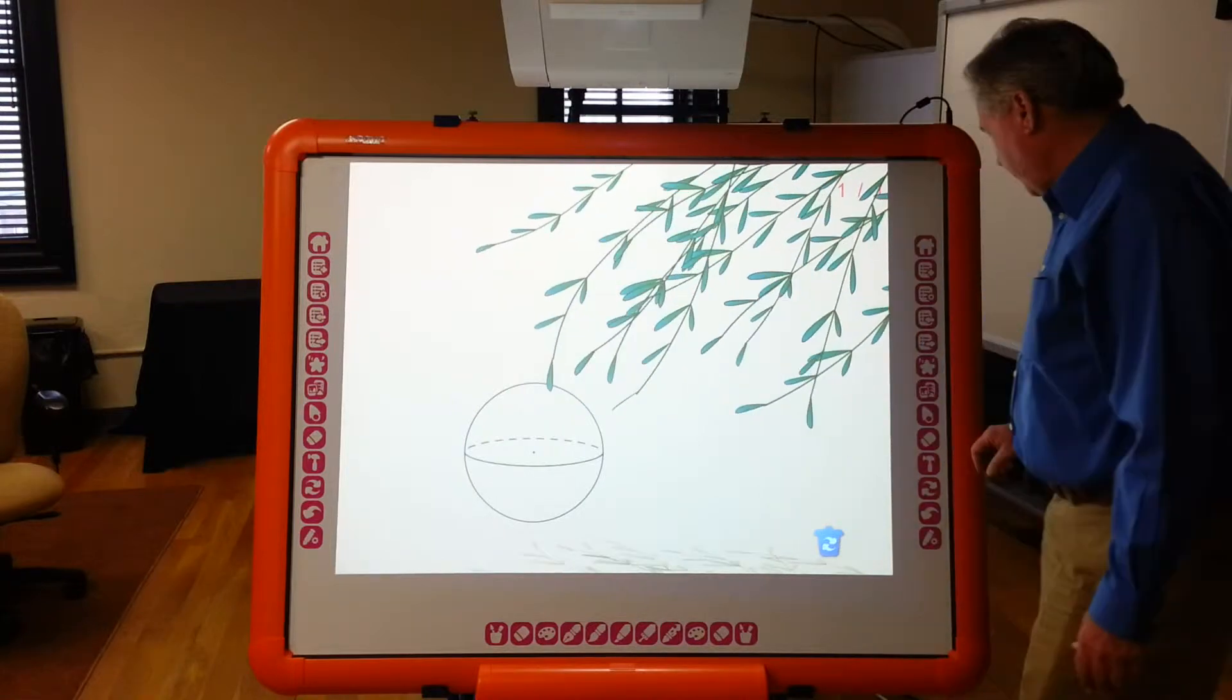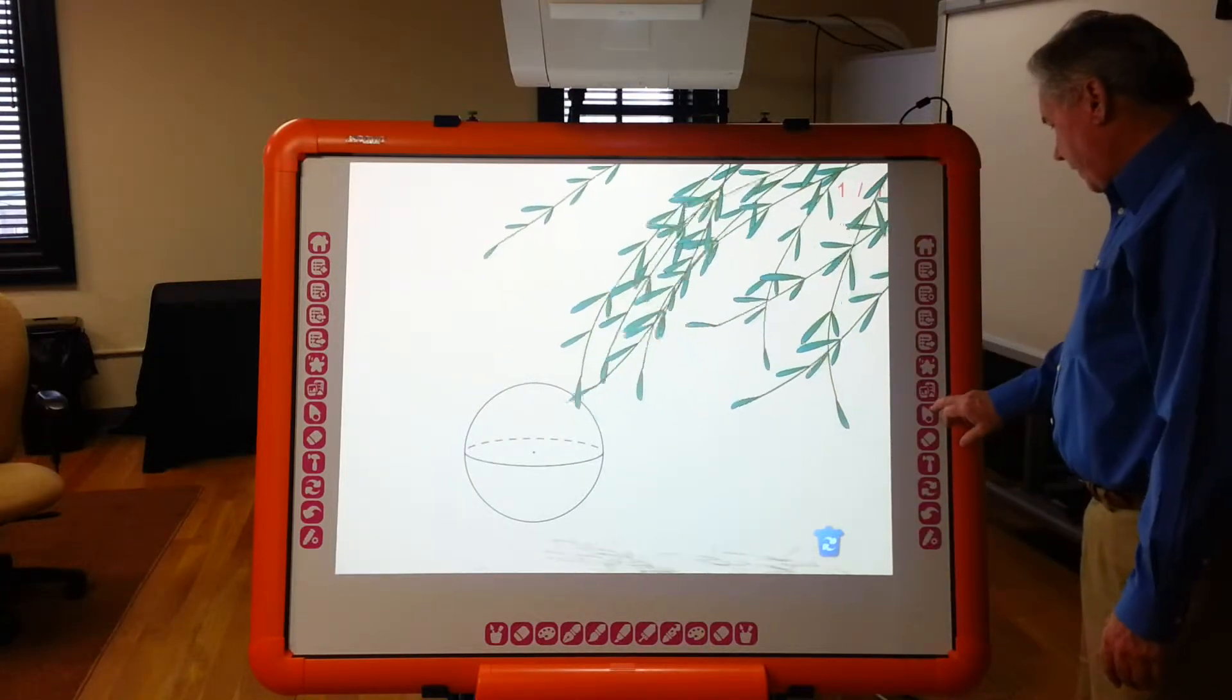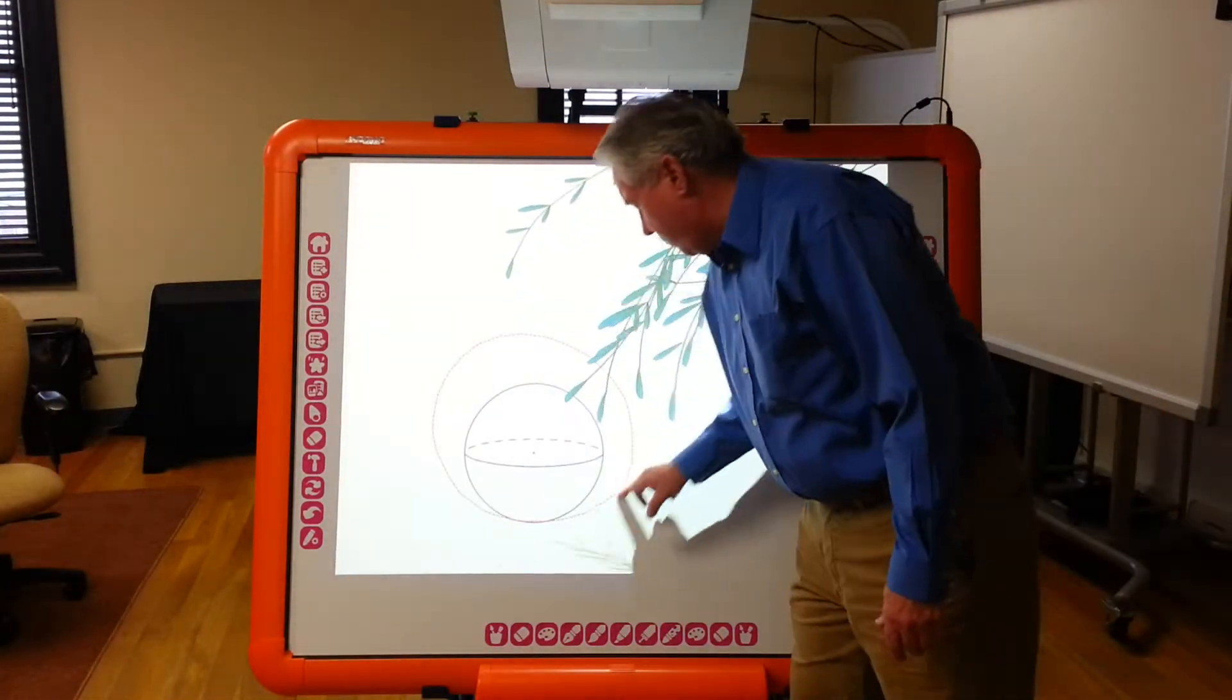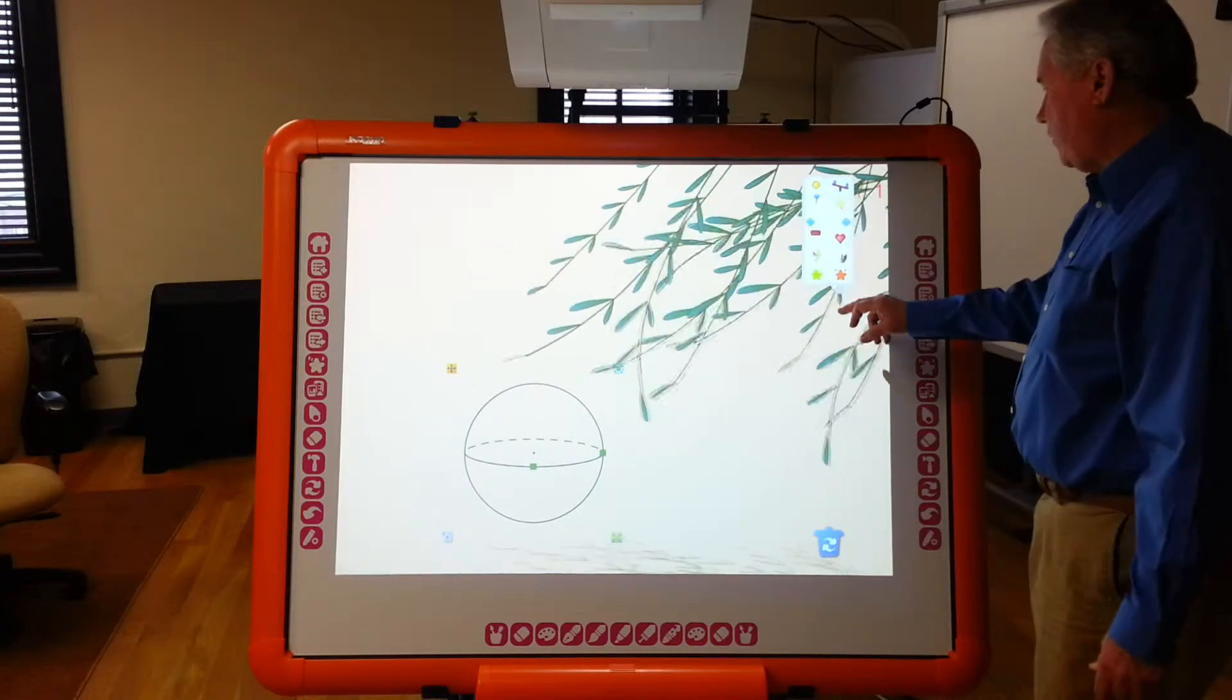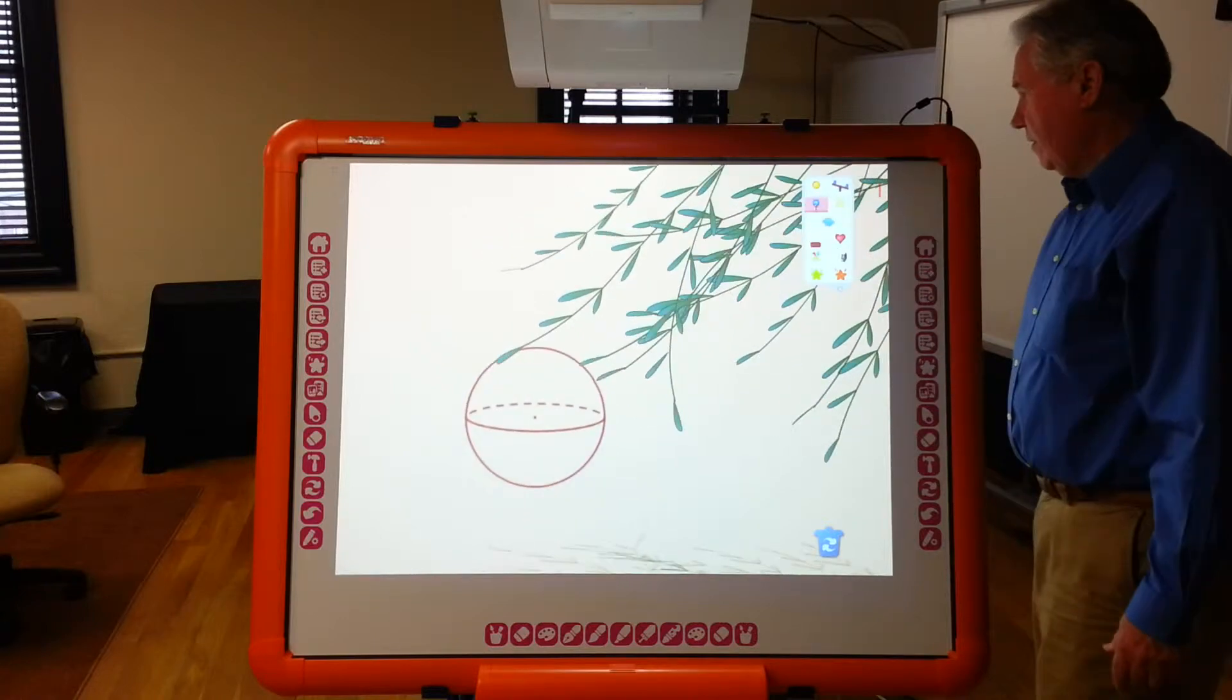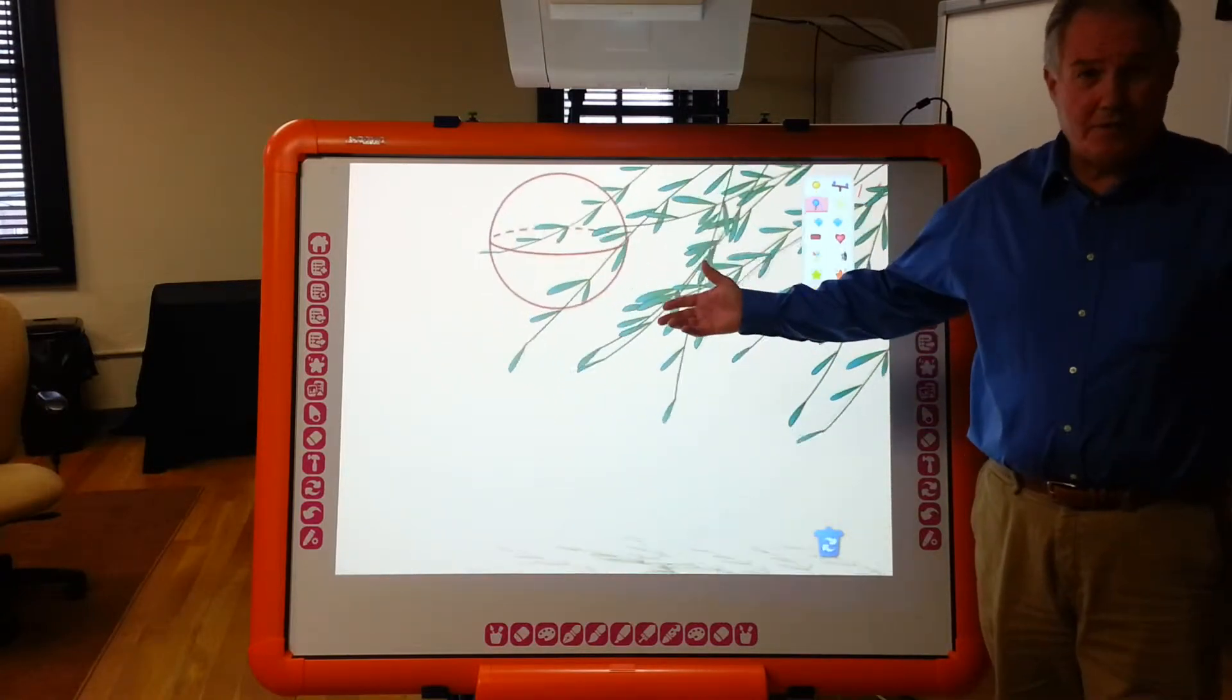One of my favorites is animation. So, if I want to animate something, I simply take my cursor, I draw a circle around it, and then I select what kind of animation I would like to have it do. And now I can animate that object that simply.